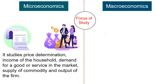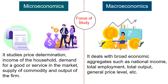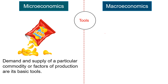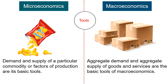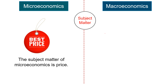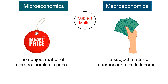Regarding the focus of study, microeconomics studies price determination, income of households, demand for a good or service in the market, supply of the commodity, and output of the firm. On the other hand, macroeconomics deals with broad economic aggregates such as national income, total employment, total output, general price level, etc. In terms of tools, demand and supply of a particular commodity or factors of production are the basic tools of microeconomics, whereas aggregate demand and aggregate supply of goods and services are the basic tools of macroeconomics. The subject matter of microeconomics is price, whereas the subject matter of macroeconomics is income.